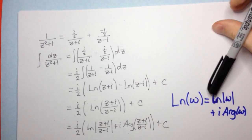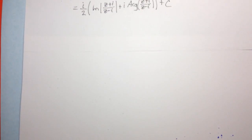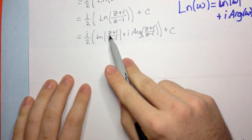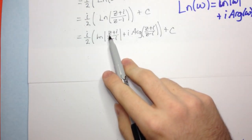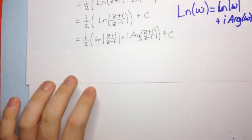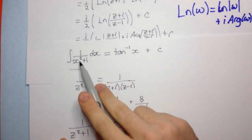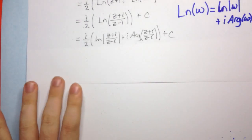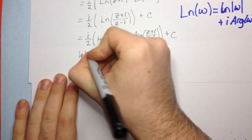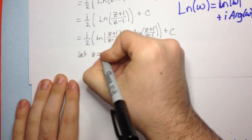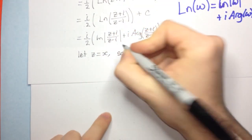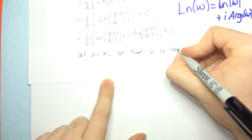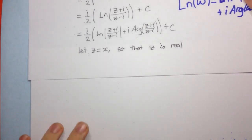Now, how do we determine these values? Well, first, this complex number z — we want it to be x, because remember we want it to be real. We want to integrate the function 1 over x squared plus 1, where x is a real number. So let's let z equal x, so that z is real.